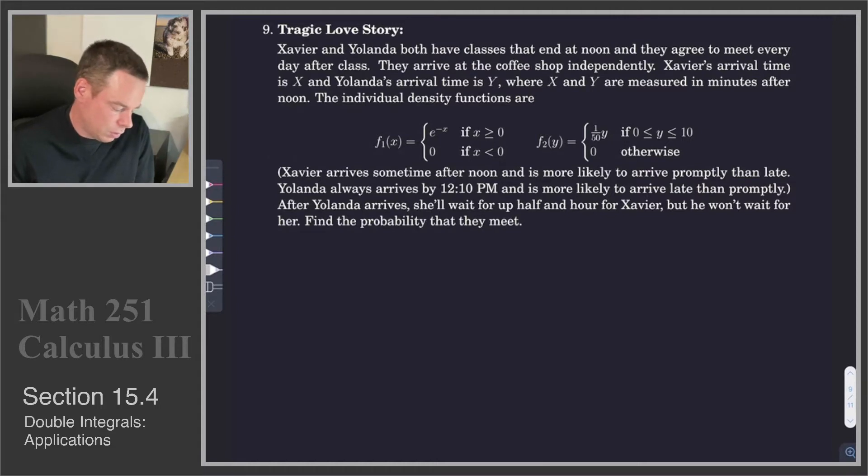The individual density functions are given as follows. F1 is Xavier's probability density function. It's 0 if X is less than 0, so Xavier is never going to arrive before noon because the class ends then. But after noon, the density is given by e to the negative X. So he's more likely to arrive early than late.